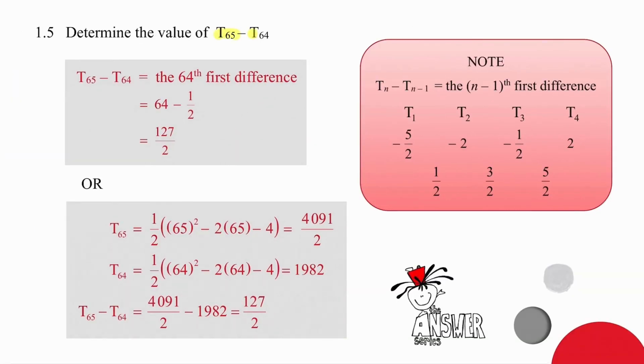In order to work out the difference between the 65th term and the 64th term in the quadratic pattern, we need to properly understand the difference in the positions. What I mean by that is the 65th term minus the 64th term is in fact the 64th first difference. If we look at the note on the right, when you take Tn and subtract Tn minus 1, you are working out the n minus 1 first difference.